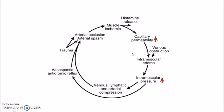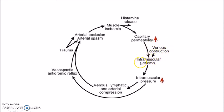This cycle is known as the Ayrton and Green cycle for Compartment Syndrome — this is a vicious cycle. Trauma can cause arterial occlusion and arterial spasm, which causes muscle ischemia. Muscle ischemia causes histamine release, leading to increased capillary permeability. The increased capillary permeability leads to intramuscular edema due to leakage of fluid into the muscles. Venous obstruction also contributes to intramuscular edema, which then leads to a rise in intramuscular pressure.